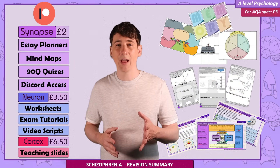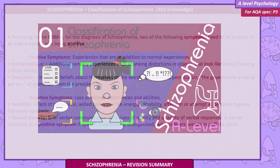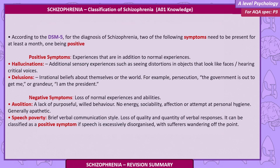Let's get started. Classification of Schizophrenia. According to the DSM-5, for the diagnosis of schizophrenia two of the following symptoms need to be present for at least a month. Positive symptoms are experiences that are in addition to normal experiences.